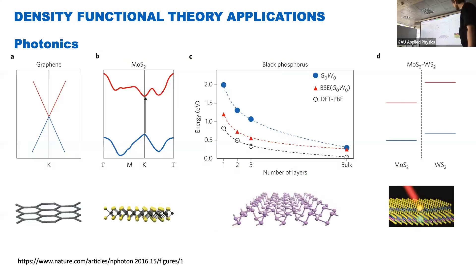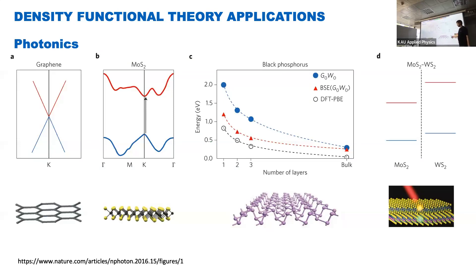In photonics we need to know how doping affects optical properties. We take some material, add some dopant atoms, and see what happens when we shine light on it — maybe it will release some energy, maybe it will absorb some energy. Then we take different materials and combine them to see what happens.